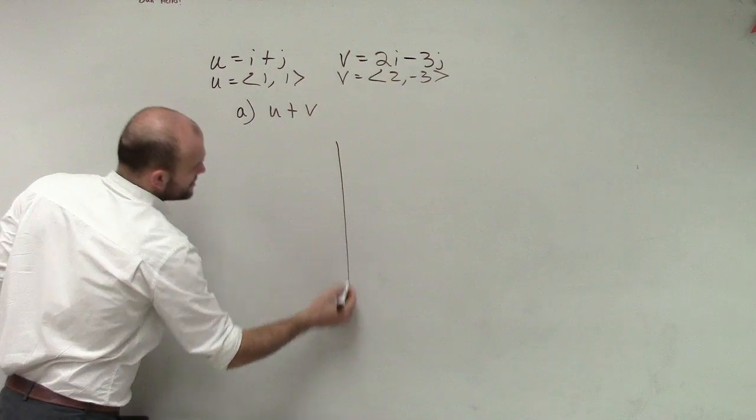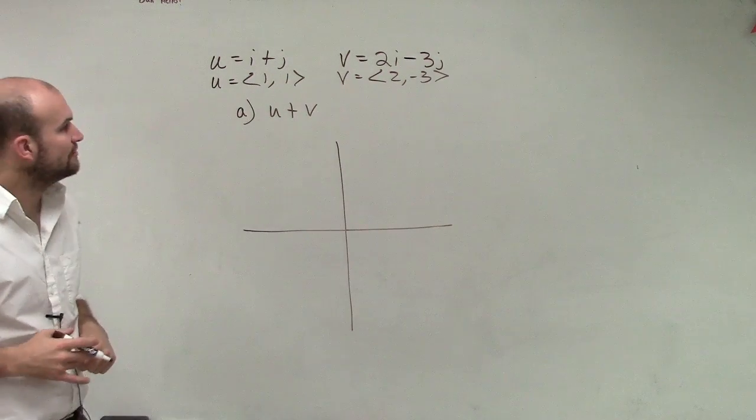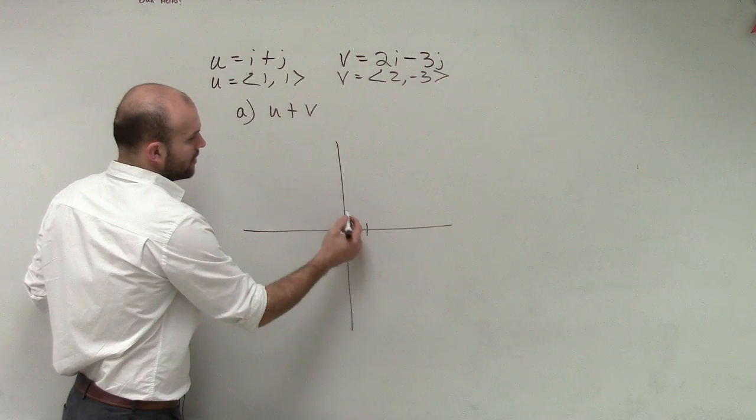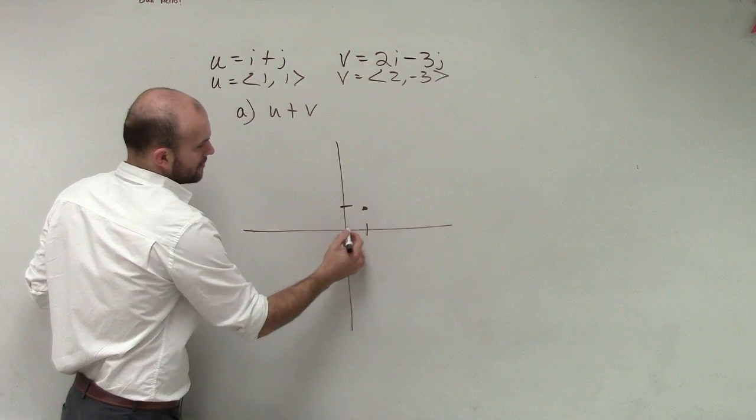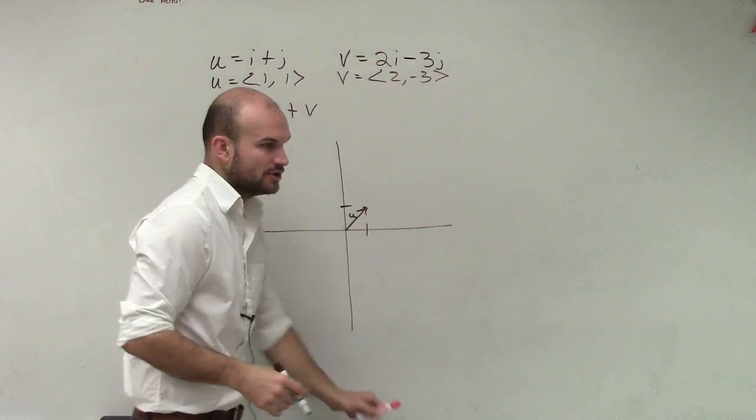So let's go ahead and sketch this first and kind of get an idea of what these two vectors look like. So the vector i plus j is just going to simply be over 1, up 1. So that's u.